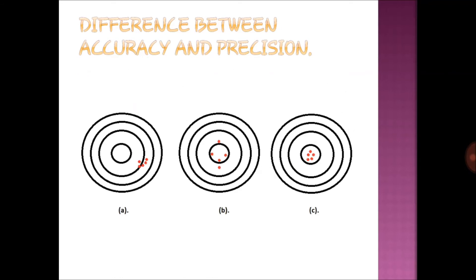In this diagram, we can see three figures A, B and C showing shots fired by a rifleman into a bull's eye indicated by the inner circle. In figure A, it shows good precision but poor accuracy because the average value of the shots is away from the bull's eye.